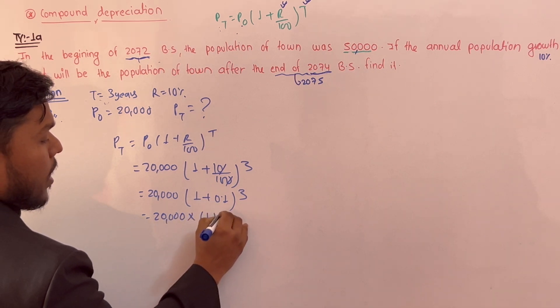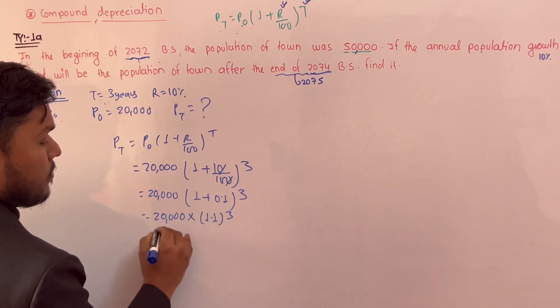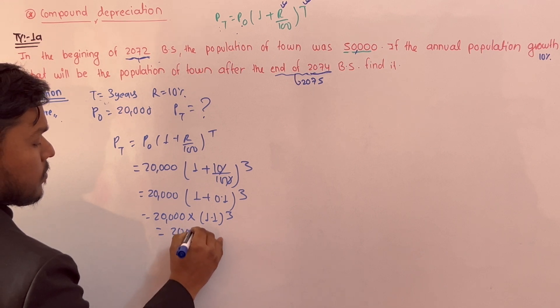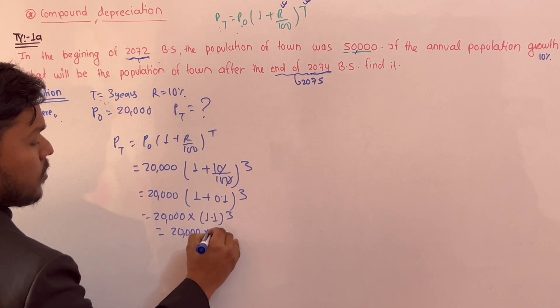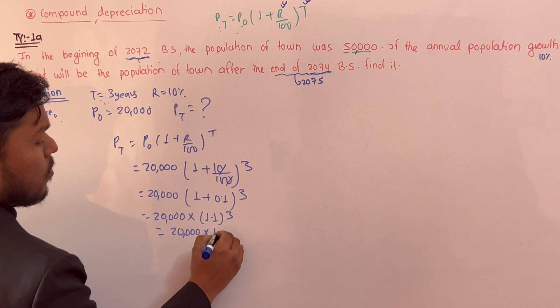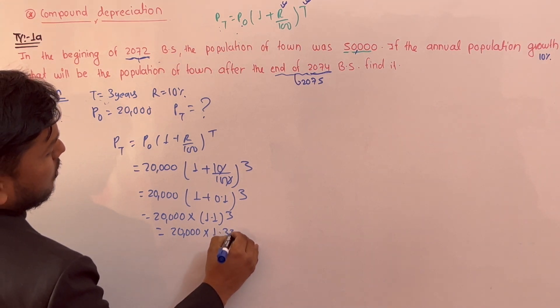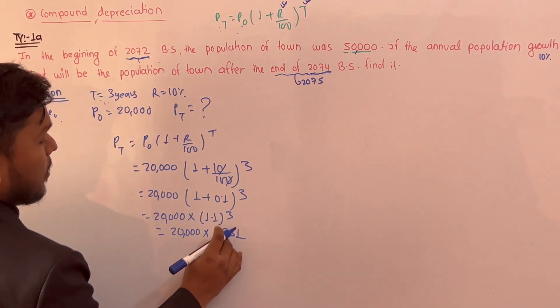So: 20,000 times (1.1) to the power 3, which equals 20,000 times 1.331.